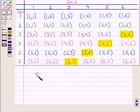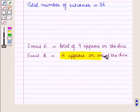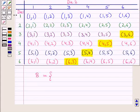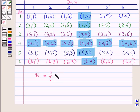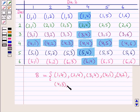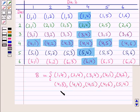Now let us write the elements of event B. For event B, we check those ordered pairs of sample space S whose one of the components is four. So event B is the set containing ordered pairs: (1,4), (2,4), (3,4), (4,1), (4,2), (4,3), (4,5), (4,6), (5,4), and (6,4).